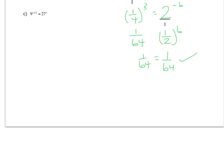Example C is a little more challenging because you can't turn 27 into 9 to the something because 9 to the nothing friendly is 27. But if you look at 9 and you look at 27, you can say, well, 9 is 3 squared, and 27 is 3 to the 3rd. So I have to change both bases in this example to 3.